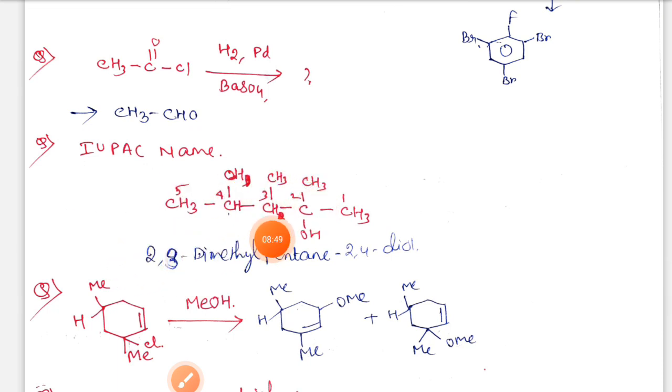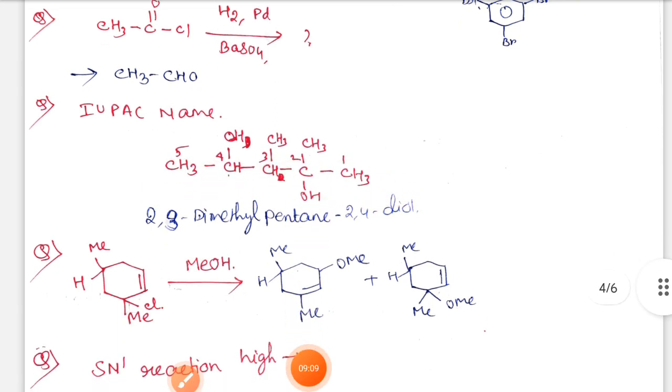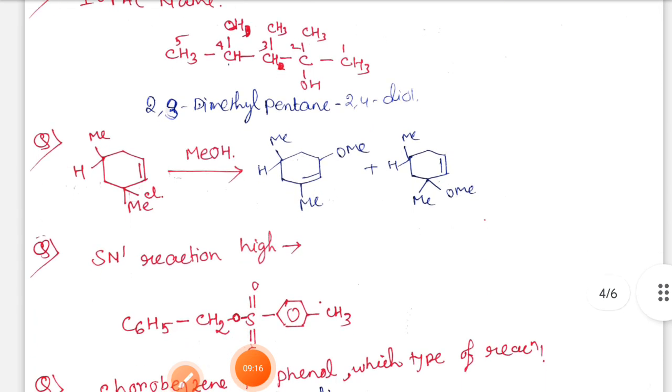Next, IUPAC name - this structure is given. If we number from the first carbon, both sides have methyl groups, but here one substituent is there, so we number from the right side: one, two, three, four, five. The name is 2,3-dimethylpentane-2,4-diol.